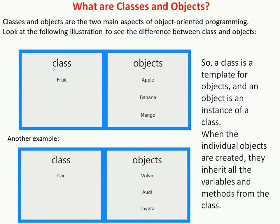We have to study about what is an object in Java. An entity that has a state and behavior is known as an object. For example, a chair, bike, marker, table, car, etc. For example, fruit is a class and that class has objects like apple, banana, mango.